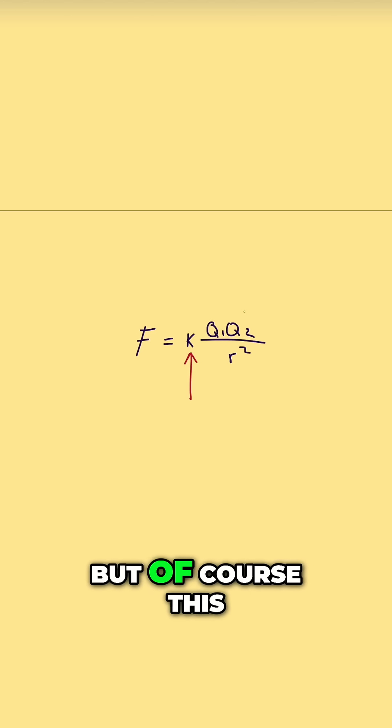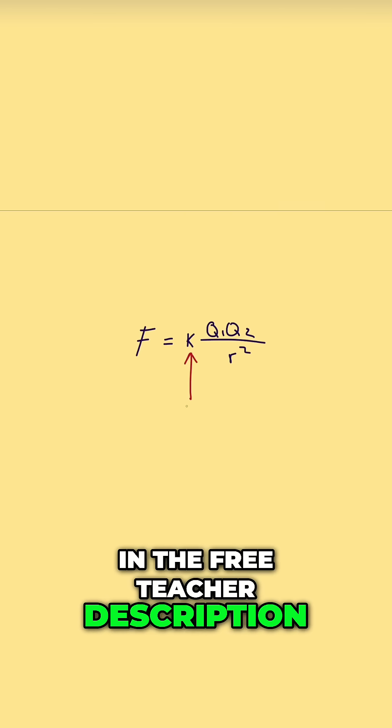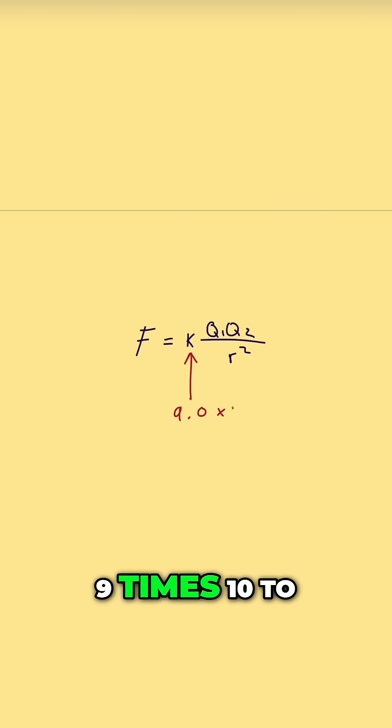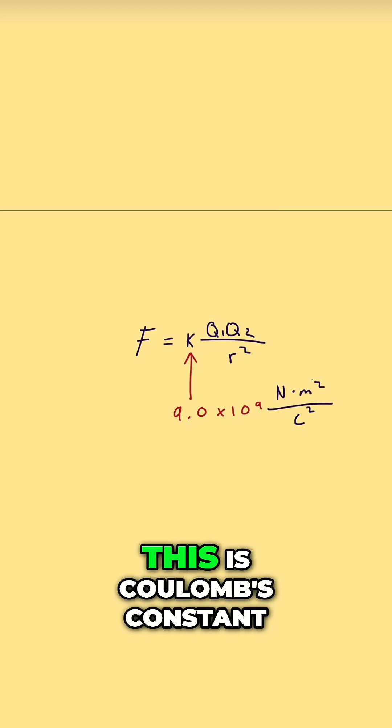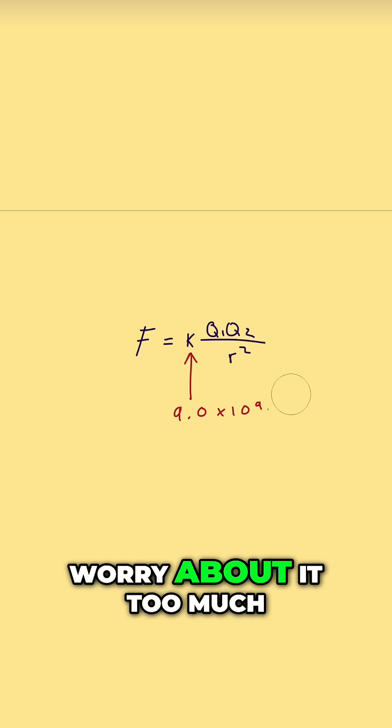You don't have to remember it, but this formula and constant are in the free cheat sheet in the description. This constant is 9 times 10 to the power of 9, with the unit Newton meter squared over C squared. This is Coulomb's constant, but you don't have to worry about it too much.